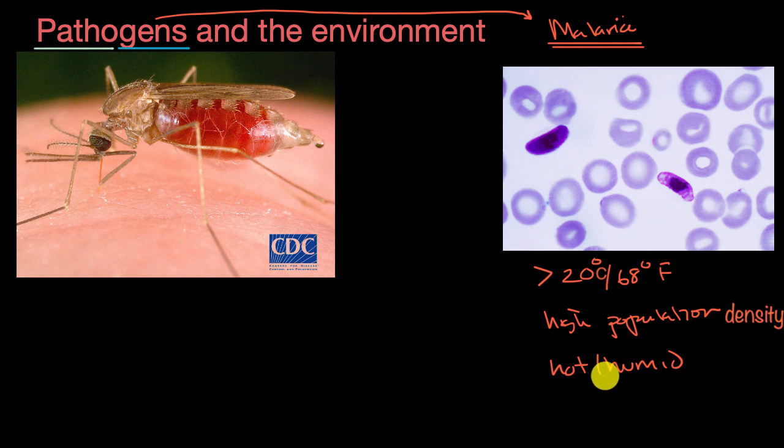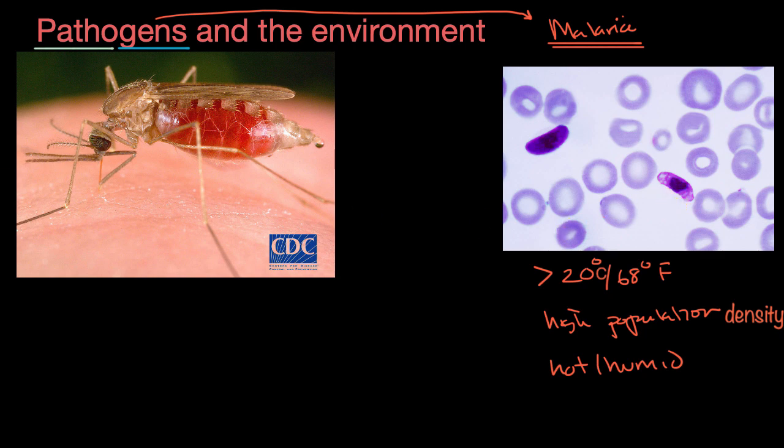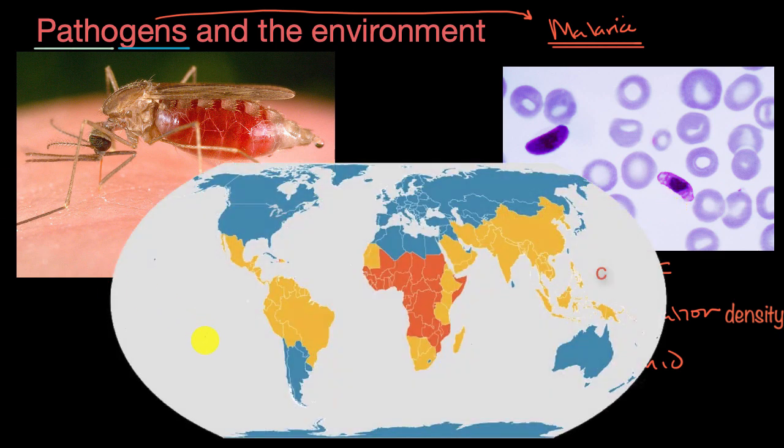So you might guess that if you're looking for things that don't dip below this, because if you dip below this, the malaria pathogen's not going to be able to go through its life cycle, you're likely looking at regions in the equator. And this map right over here confirms our intuition.